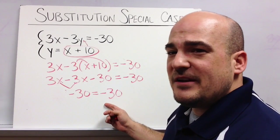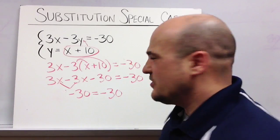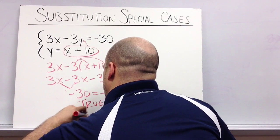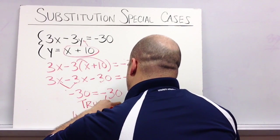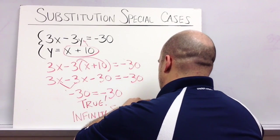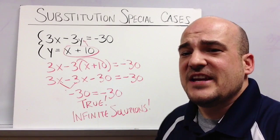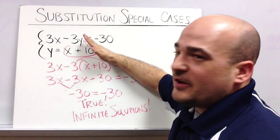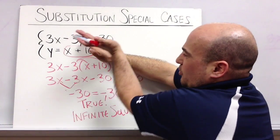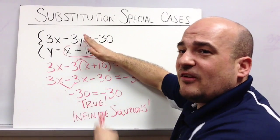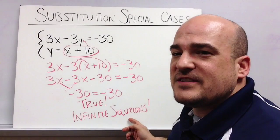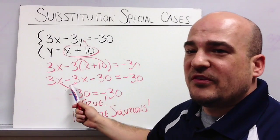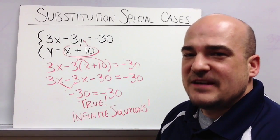So this is a true statement and anytime we end up with a true statement, that means we're going to have infinite solutions. This is a special case, and just like when we graphed systems of equations and sometimes we had lines that were on the coordinate plane and then we had another line that lined up right on top, then we knew that was infinite solutions. Same thing here using substitution. Anytime our variables disappear and we end up with a true statement, that means infinite solutions. Let's try another example.